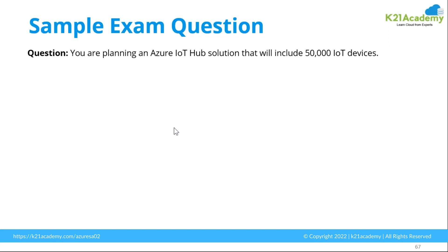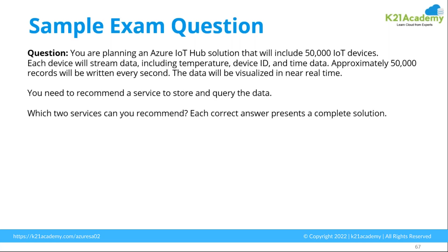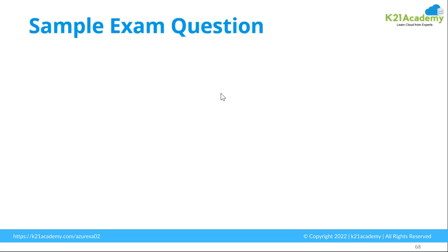You are planning an Azure IoT Hub solution that includes 5,000 IoT devices. Each device will stream data including temperature, device ID, and time data. Approximately 5,000 records will be written every second and the data will be visualized near real-time. You need to recommend services to store and query the data — two services can be recommended, and each correct answer presents a complete solution. Choices are: Azure Table Storage, Event Grid, Cosmos DB SQL API, and Azure Time Series Insights.